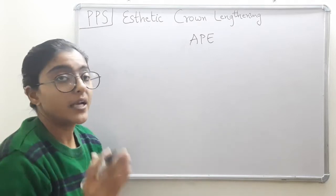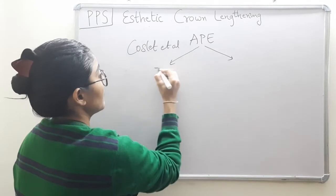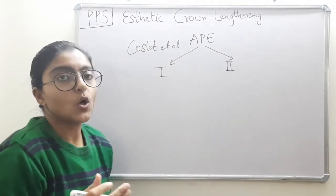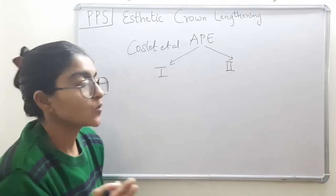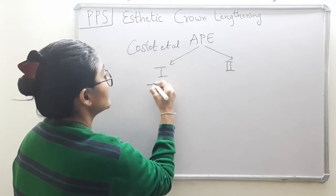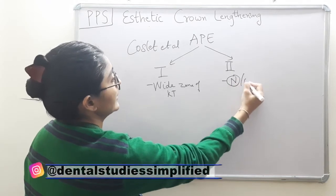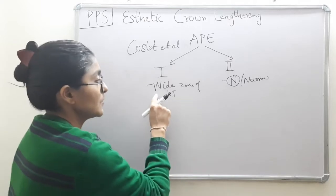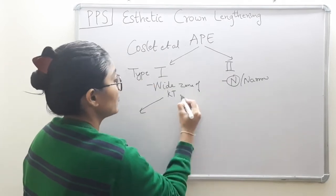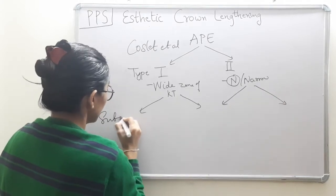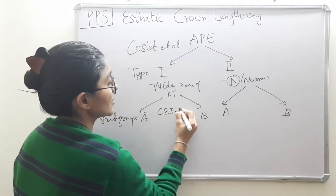As elaboratively discussed by Coslett et al., there are two categories of APE — type 1 and type 2 — based on two main parameters: the width of keratinized tissue and the distance between CEJ and bone crest. Under type 1 we have a wide zone of keratinized tissue, and under type 2 we have normal or narrow width. Under each type we also have two subgroups, A and B.